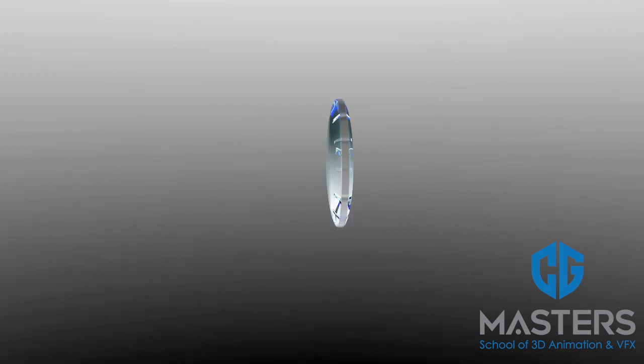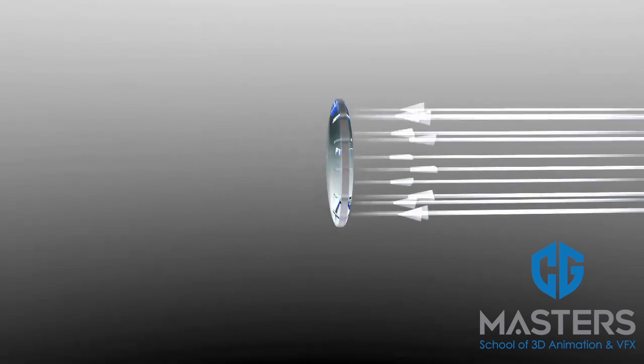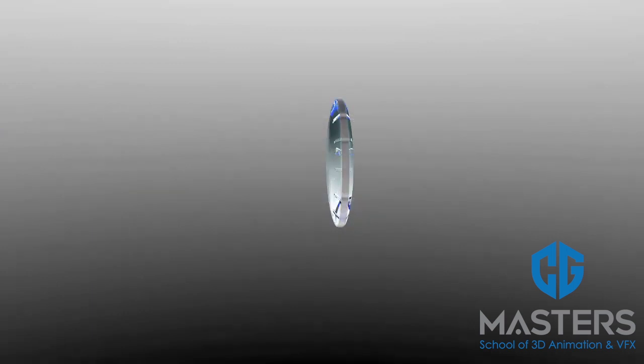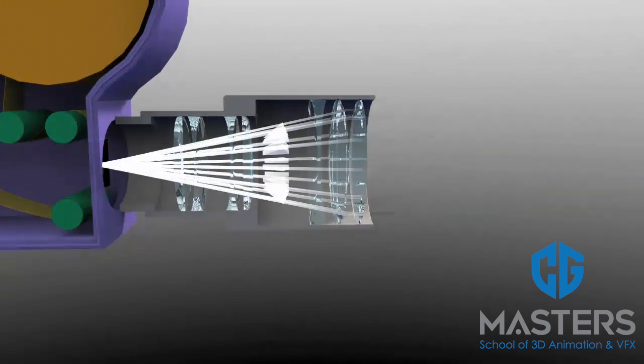The focal point is a point onto which light traveling in parallel paths is focused. Light that is traveling in parallel paths is called collimated light. Since light can pass through a lens in either direction, a lens has two focal points, one on each side. In photography, the focal point is located at the image plane where the recording medium resides.